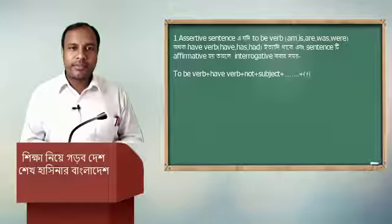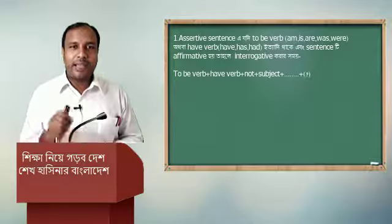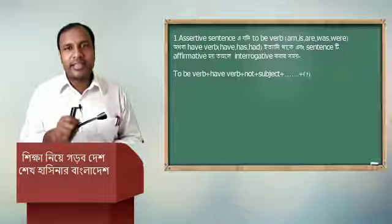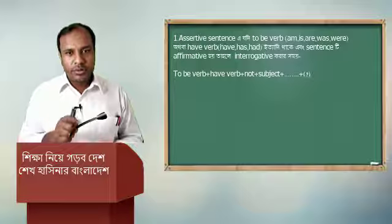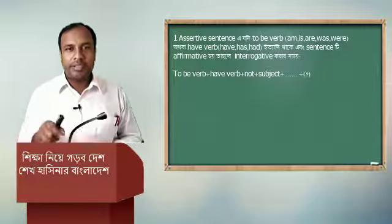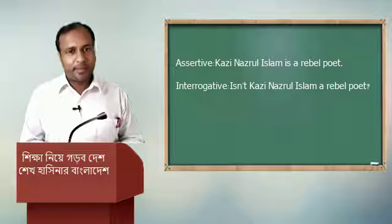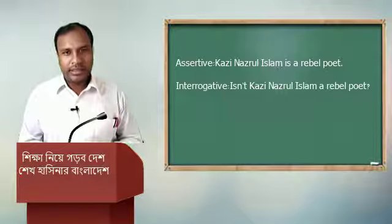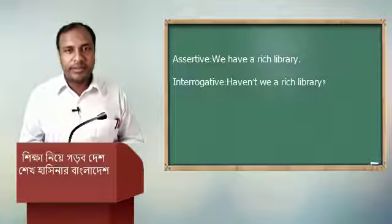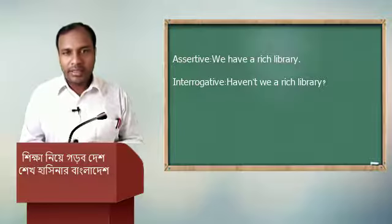Number one: if an assertive sentence has a to-be verb — am, is, are, was, were — or a have verb — have, has, had — and the sentence is affirmative, then when making it interrogative, the formula is: to-be verb / have verb + not + subject + ... + question mark. For example: 'Kazi Nazrul Islam is a rebel poet.' For a have verb example: 'We have a rich library.' The interrogative will be: 'Have we not a rich library?'